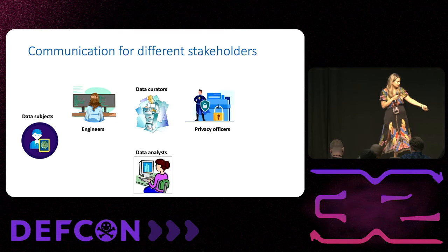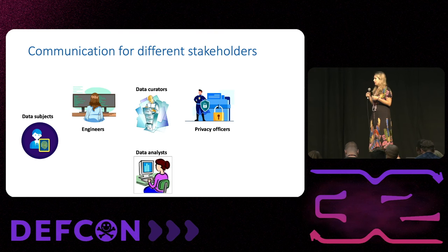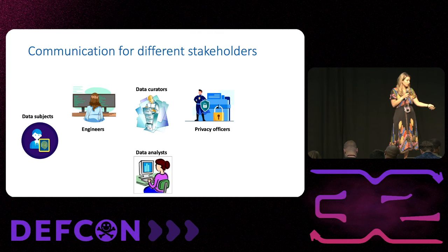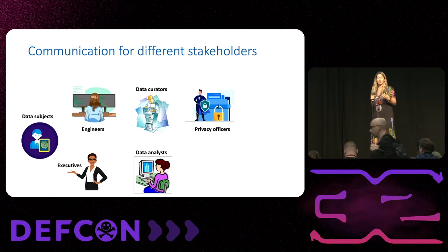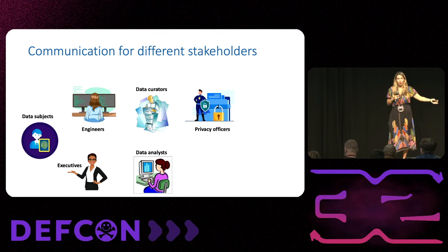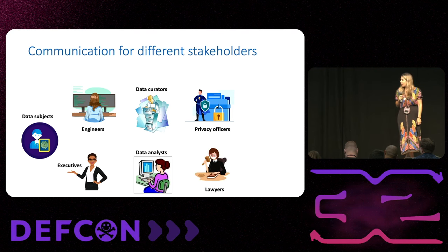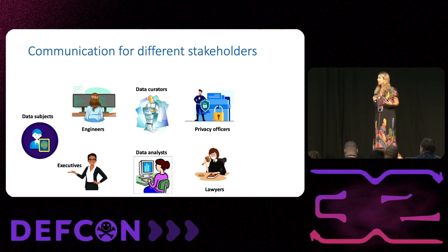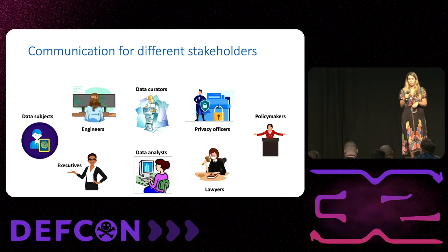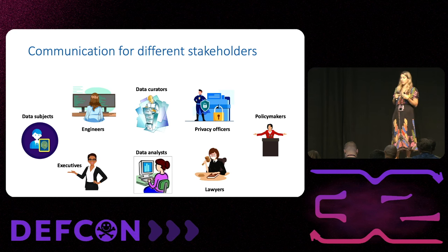There are also privacy officers who think about things like compliance and regulatory requirements. Executives have to decide: is this good for my company? What is the cost of hiring a bunch of privacy engineers, and they don't want accuracy loss. There are lawyers who must decide whether the use of this technology is compliant with privacy laws and regulations around data use. And there are policymakers who get to make new laws around the use of data if current ones are not particularly adequate.